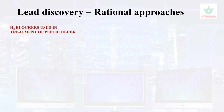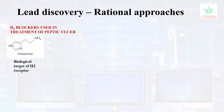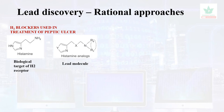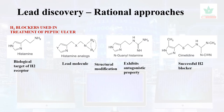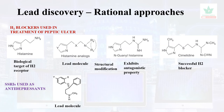An example of rational approaches to lead discovery is H2 blockers used in treatment of peptic ulcer. The biological target was H2 receptors where histamine binds. Histamine was taken as the lead molecule and structural modifications were done, leading to the discovery of N-guanyl histamine, which exhibited antagonistic properties. Further optimization led to cimetidine coming to market, and subsequently ranitidine and several other H2 blockers were developed.